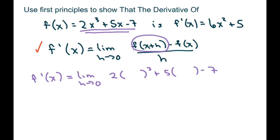And everywhere there was an x, I'm going to input x + h. Now for the second part, that just means subtract the whole function. So let me see if I can squeeze it in here. 2x³ + 5x - 7. And that's all over h.